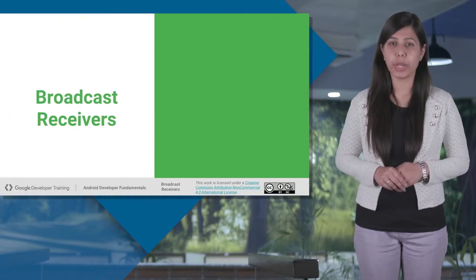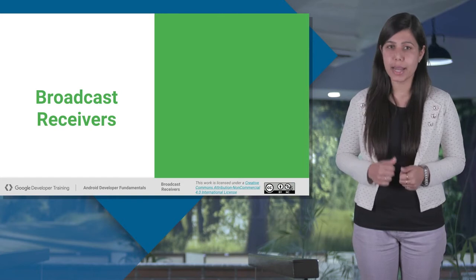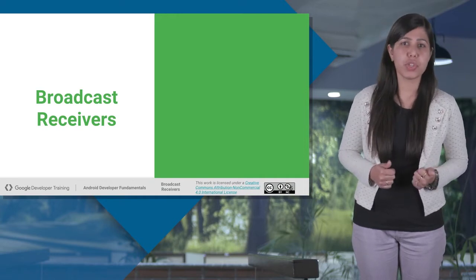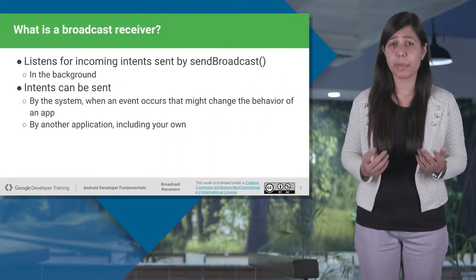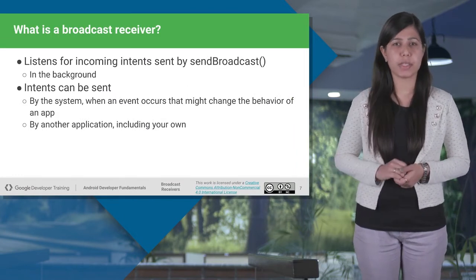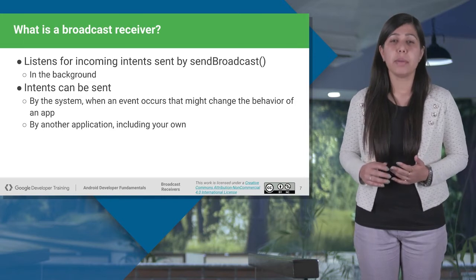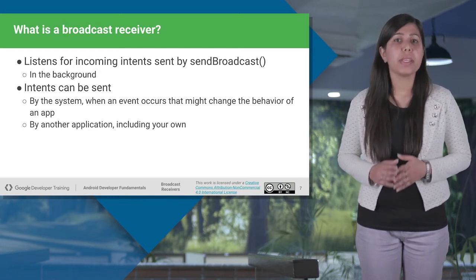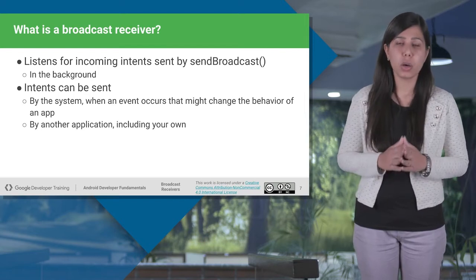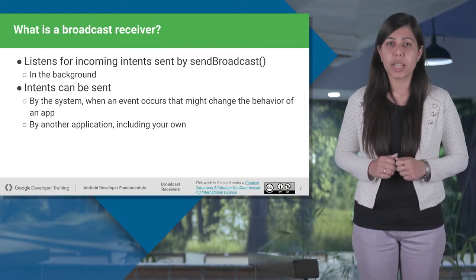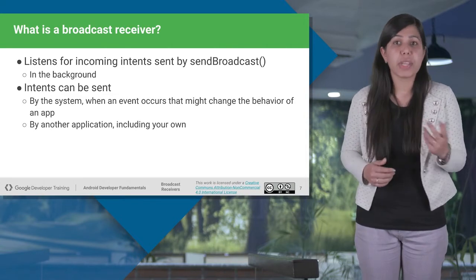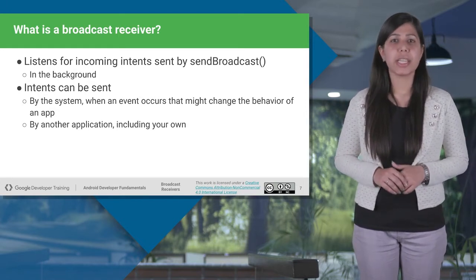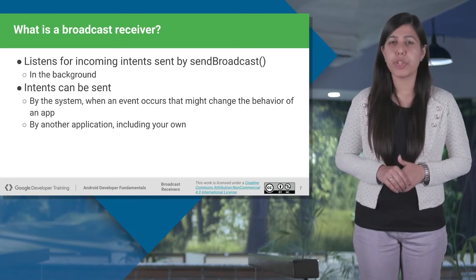Broadcast receivers are a component that listens to what is going on and allows you to register for system or application events — meaning they do something in response to the message that is broadcasted. An application listens for specific incoming events sent by sendBroadcast by registering a broadcast receiver. For example, broadcast intents can be originated from the system when certain events happen in the operating system, such as a broadcast announcing the screen has turned off, the battery is low, or a picture was captured. They can also be originated by any other application — you can even set your app up to launch music when you connect headphones.